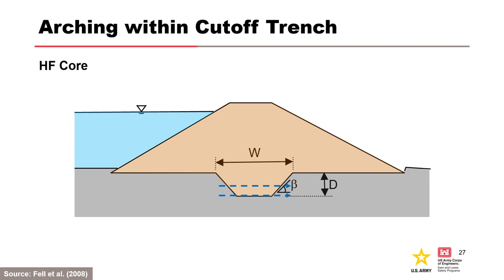For cutoff trenches, concentrated leak erosion of the core can occur at the core-foundation contact by water flowing in joints in the rock foundation. Concentrated leak erosion can also occur in a crack or hydraulic fracture across a cutoff trench. Hydraulic fracture in a cutoff trench needs to coincide with an open joint or coarse grain soil layer downstream providing an unfiltered exit. The hydraulic gradient used in the assessment should be based on the estimated hydraulic gradient across the cutoff trench.